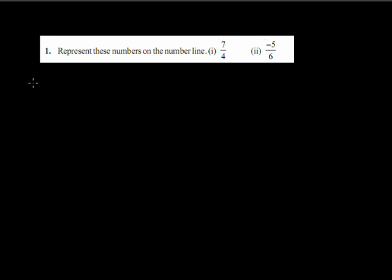Good afternoon. Today we will continue the first chapter, Rational Numbers, and the second exercise of rational numbers — Exercise 1.2. The first question is to represent the numbers 7/4 and -5/6 on the number line.